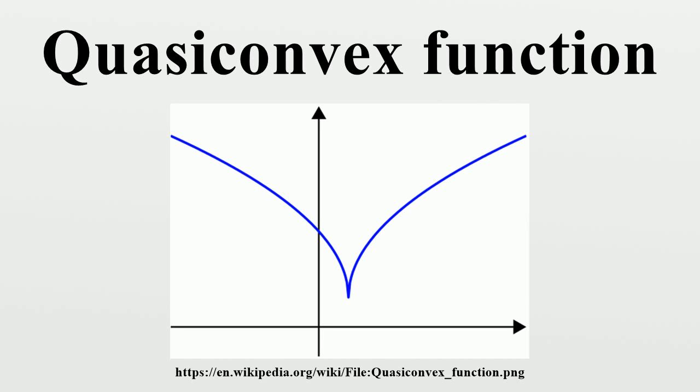The floor function is an example of a quasi-convex function that is neither convex nor continuous. If functions are positive convex decreasing functions, then the composition is quasi-convex.